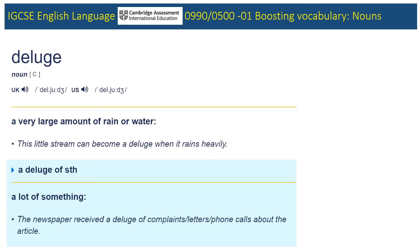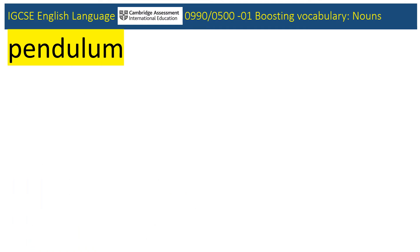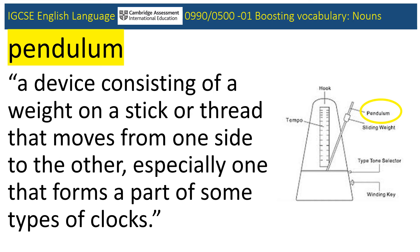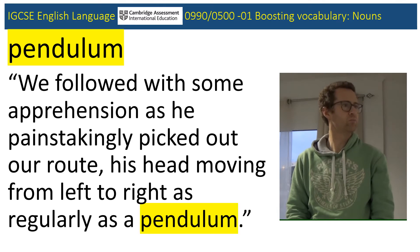Time to move on to our final set of five nouns, kicking off with pendulum, as used in the 0990 November 2019 paper. We're back in the Canadian Arctic. We are the Taurus and he is the guide Adam, who is on the lookout for polar bears. How is his head moving? Define pendulum. It's useful to refer to a metronome in which the pendulum moves from side to side. Within this simile, the implication is that the guide's head is moving rather like this.